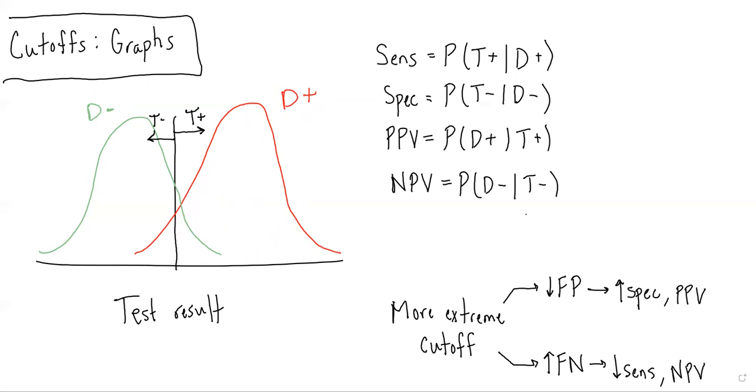specificity is the probability of getting a negative test result given you do not have the disease. So that would be, you know, given you do not have the disease, this area shaded in purple divided by the total area under the disease negative curve.